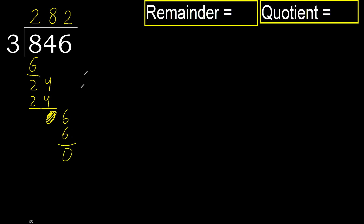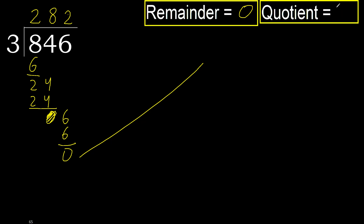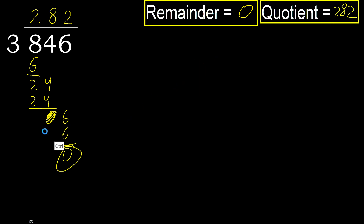Ok. Subtract, next. There is no more number, therefore finished. Therefore 846 divided by 3 is 282.